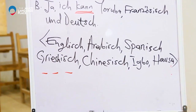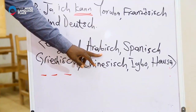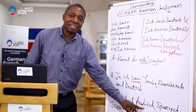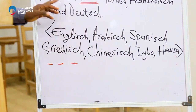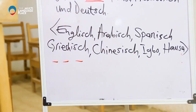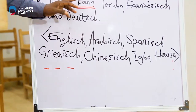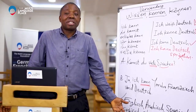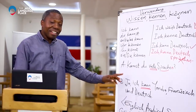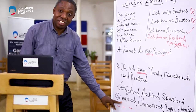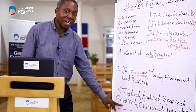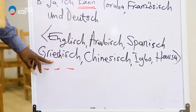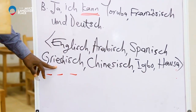Say it after me. Then: 'Ja, ich kann Arabisch' — I understand and I can speak Arabic. Say it after me: 'Ja, ich kann Arabisch.' Next: 'Ja, ich kann Spanisch' — I understand and I can speak Spanish. Then: 'Ja, ich kann Griechisch' — I can speak Greek.